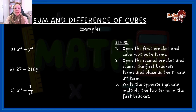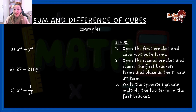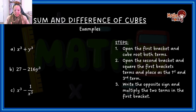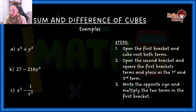When it comes to the sum and difference of cubes, it is important that you are clear on the different types of factorization methods. You've got highest common factor, difference of two squares, trinomials, and grouping. Each of these has a specific way in which you have to factorize. So the first job when a question says factorize is to identify which type they are actually asking you to do. Once you identify it, then you apply that method.